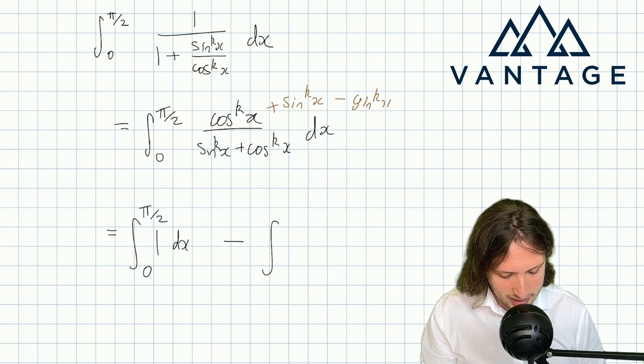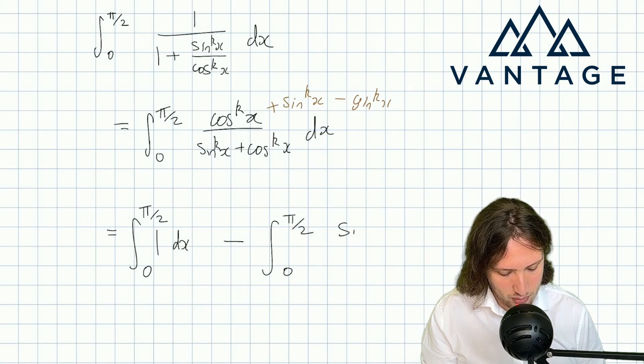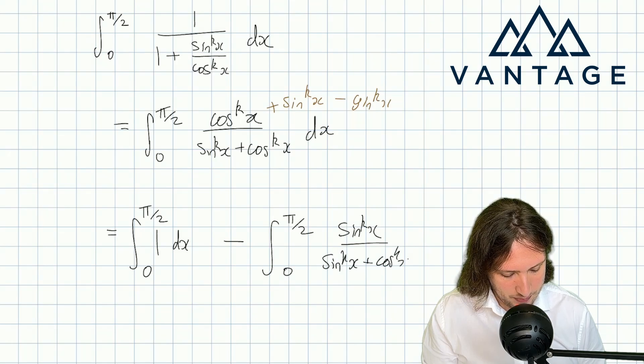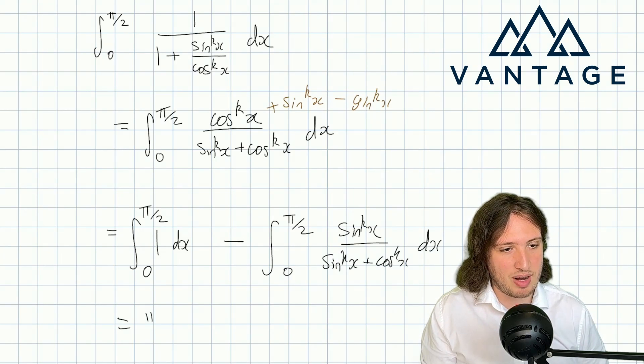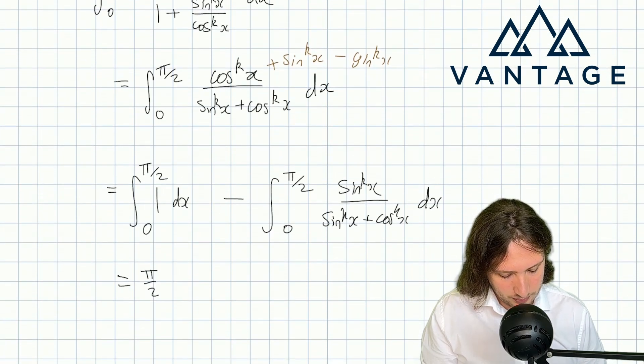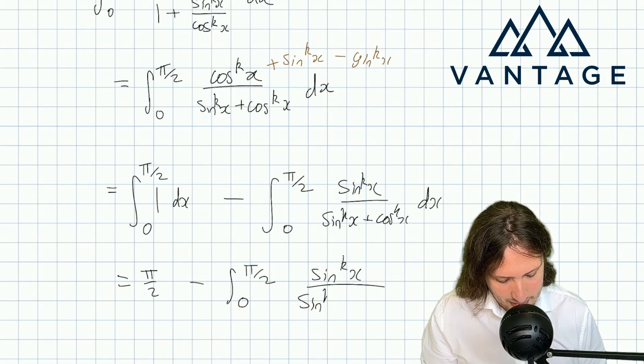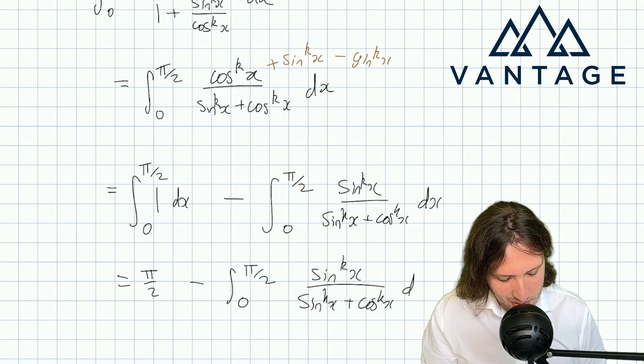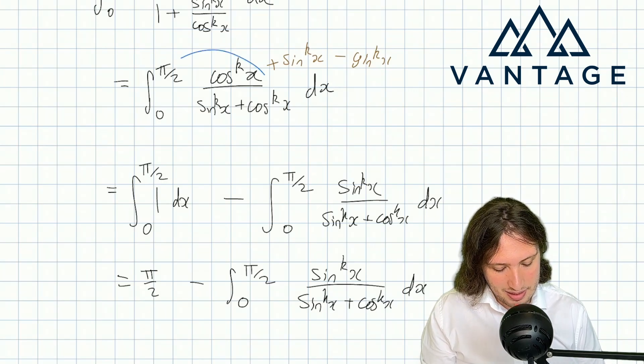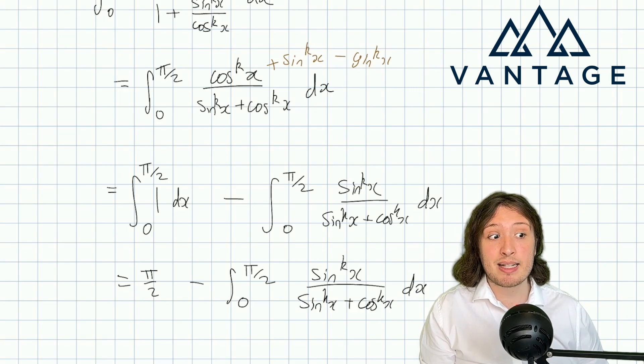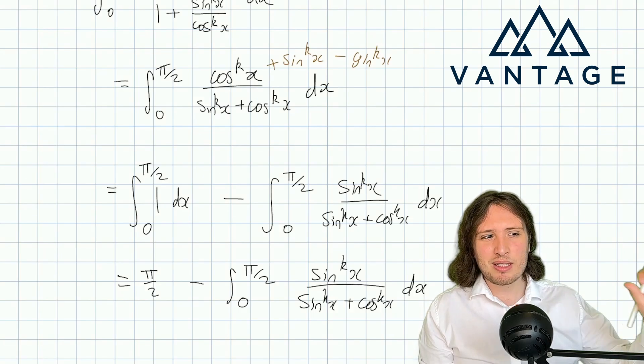So by playing this game, I've got basically a one now—that's nice and easy to integrate, so that's good at least. And I've got my other integral, so that's come from this bit, and then I've still got this bit which is the integral 0 to π/2 sine to the k over sine to the k plus cos to the k. So the first integral, great, that's just π/2.